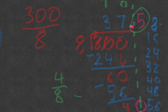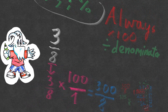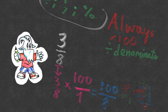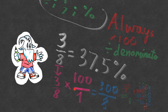Going back to our previous problem — let's remember this answer: 37 and a half. As you can see, I've done my division, so three eighths as a percentage is equal to 37.5%. Using the always method, I multiplied by 100 and then divided the numerator by the denominator.